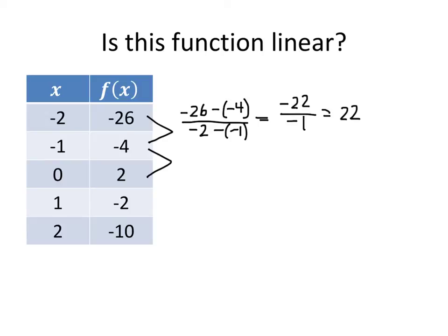For our next pair of points, the change in y is negative 4 minus 2, divided by negative 1 minus 0. That gives us negative 6 on the top and negative 1 on the bottom, which gives us an average rate of change of 6.